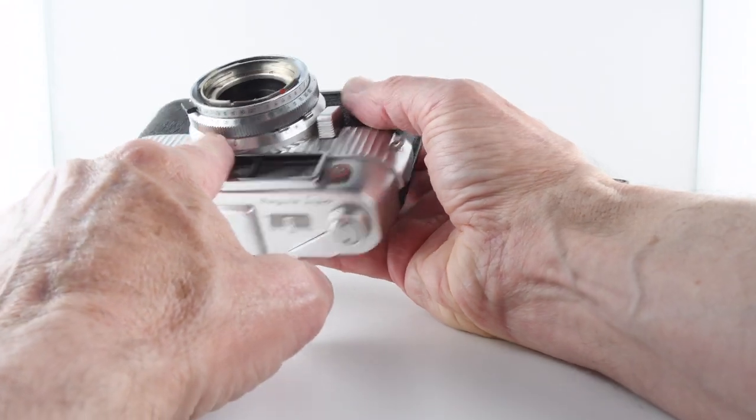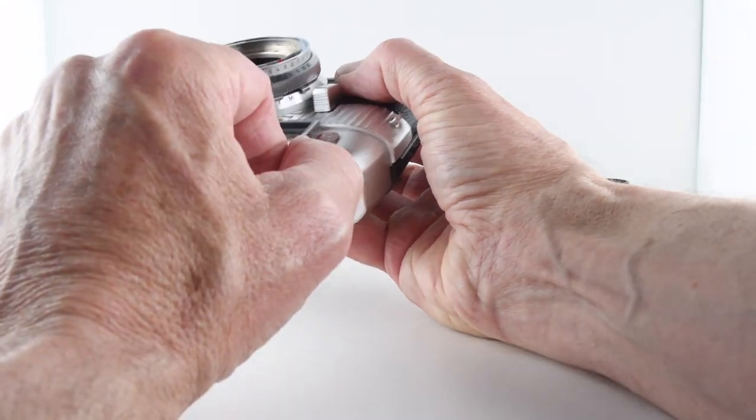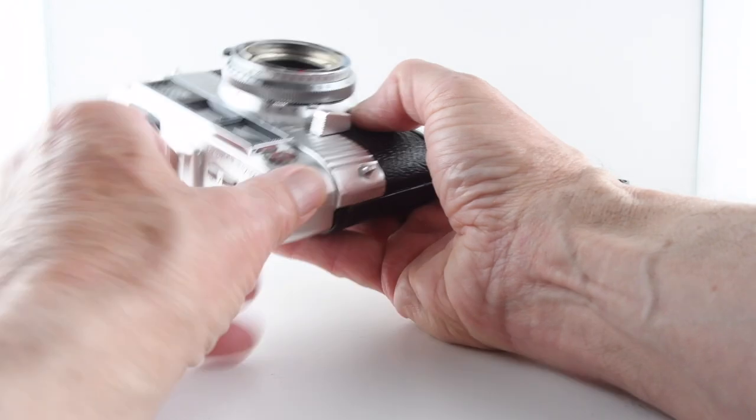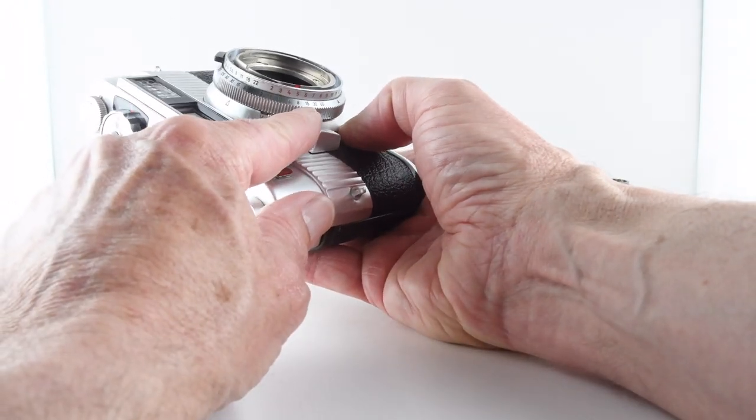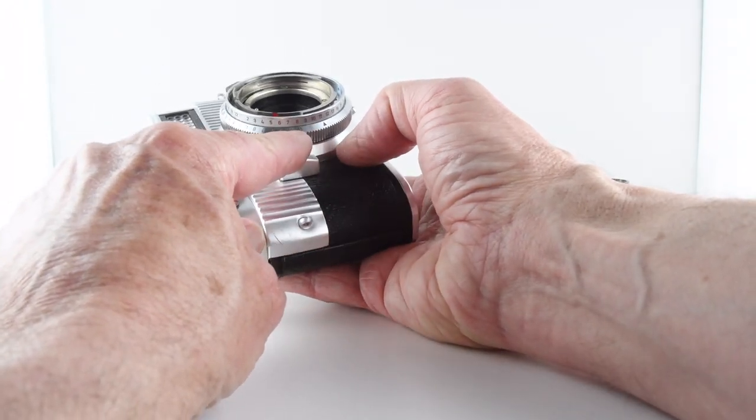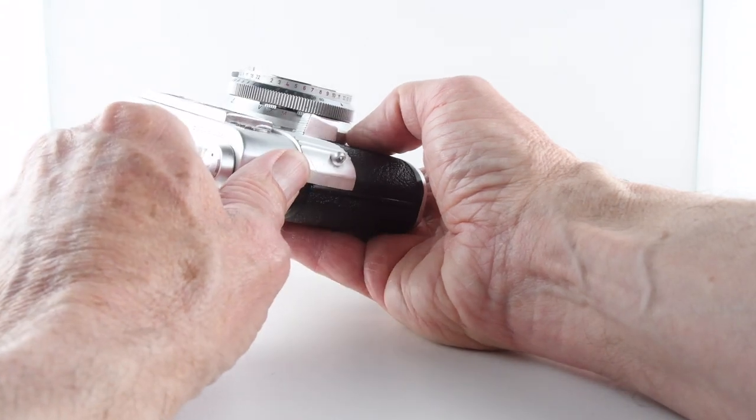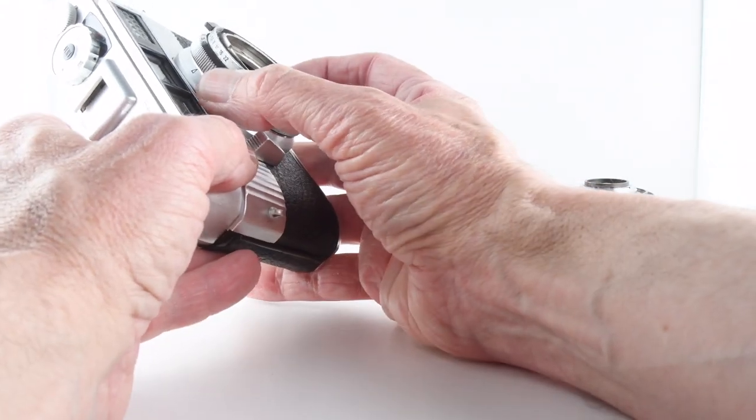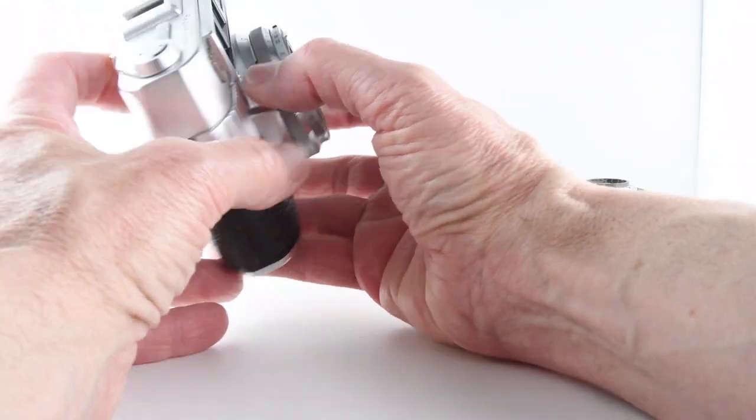Shutter speeds go from 1/300th of a second down to bulb and beyond. We actually have 4 seconds, 8 seconds, 15 seconds, 30 seconds, and 60 seconds. Again, a nice feature - I've not had a camera so far that had those features.